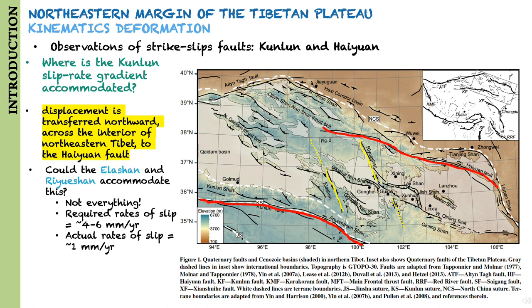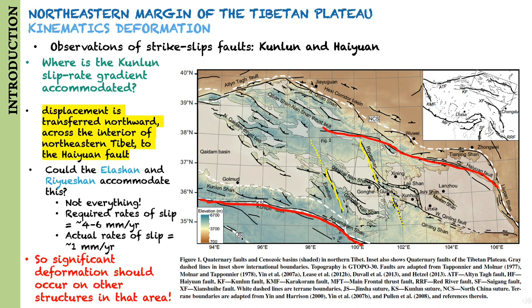But this model requires relatively high rates of slip from 4 to 6 mm per year along these structures to accomplish complete transfer of slip. However, geologic and geomorphic data suggests that right-lateral slip rates along the Elashan and Riyuexan faults are only about 1 mm per year. So significant deformation must occur between the Kunlun and the Haiyuan faults on other structures in addition to the Elashan and Riyuexan faults.